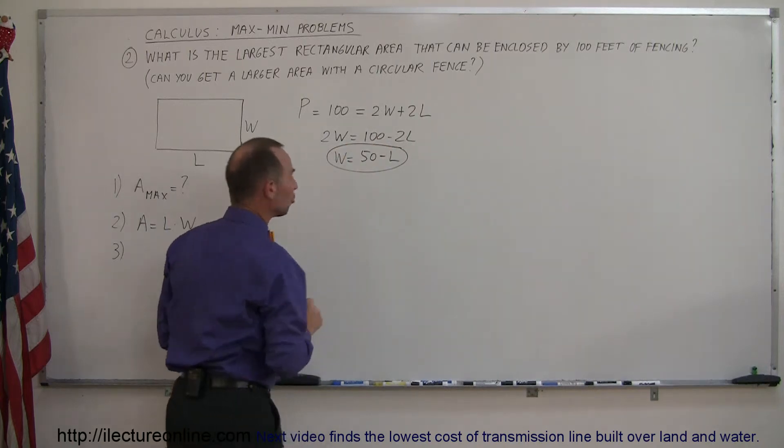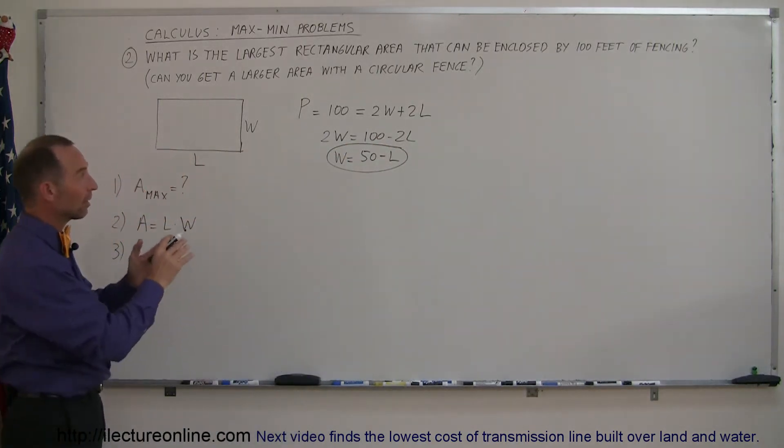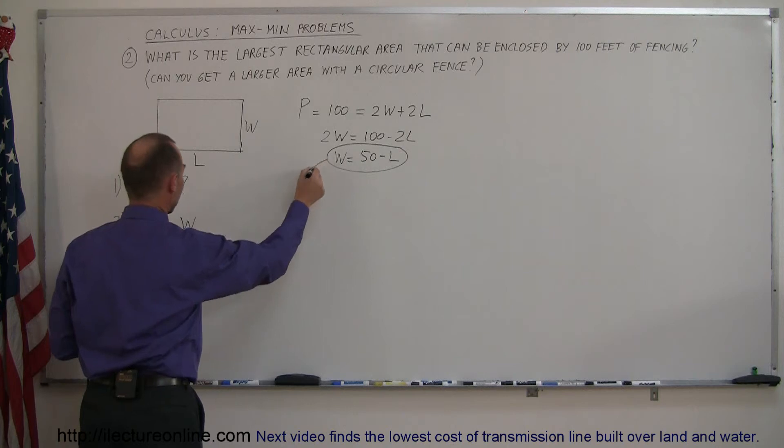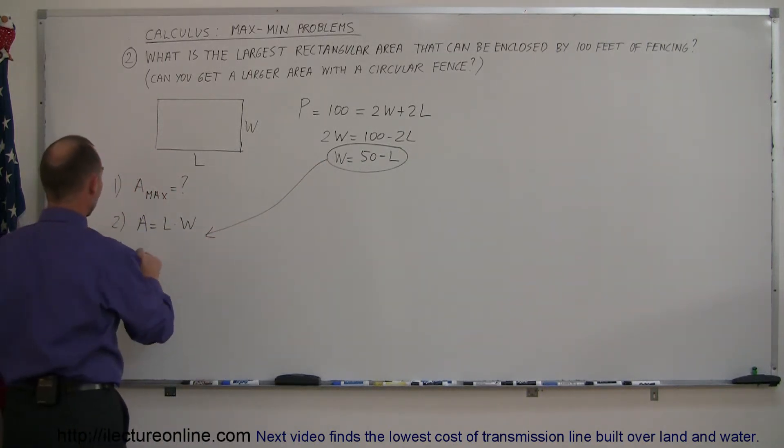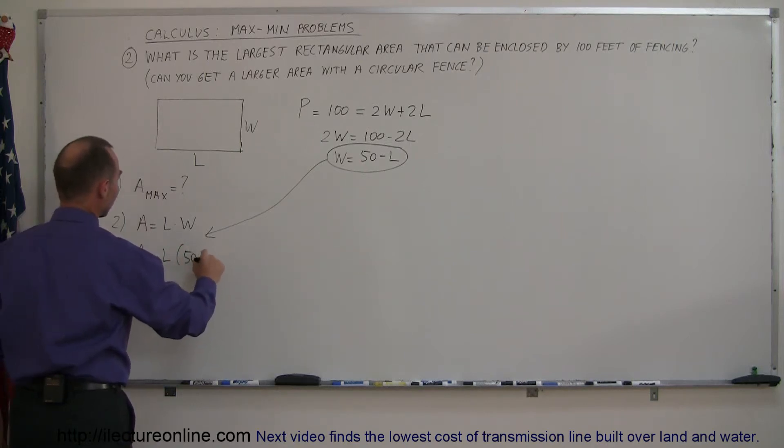So with this relationship between W and L, which came out of our constraint, I can plug that back into our equation, and instead of writing W, I can write 50 minus L, so the area is equal to L times 50 minus L.